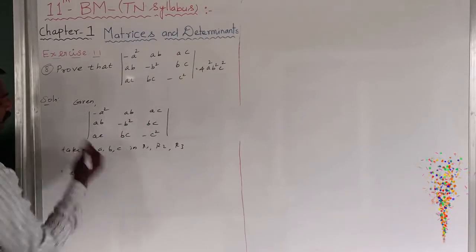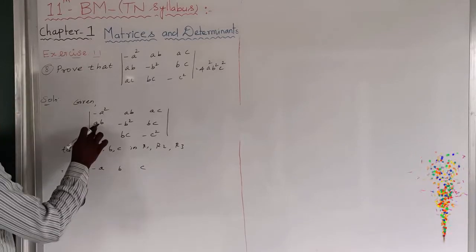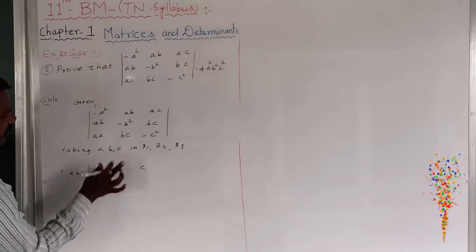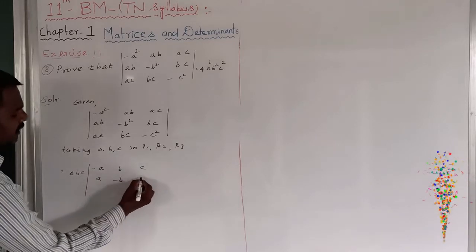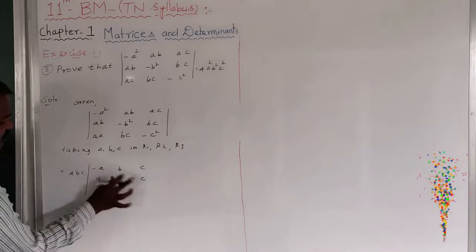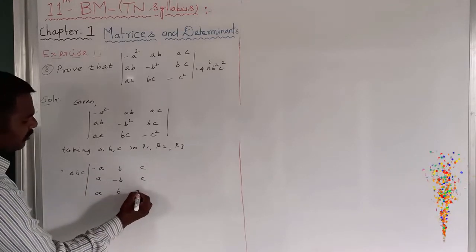So here, taking out a from row 1 gives minus a, b, c. Taking out b from row 2 gives a, minus b, c. And taking out c from row 3 gives a, b, minus c.